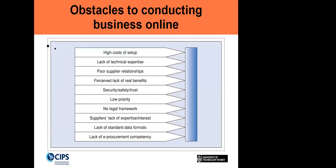Obstacles to implementing e-procurement: first, high cost — you need to spend several million dollars to buy high-level electronic procurement applications. Second, lack of technical expertise — if you do not have the expertise to implement electronic procurement, you need to hire people. Third, poor supplier relationships — electronic procurement may result in less face-to-face communication with suppliers, which can end up weakening the relationship. Other issues include perceived lack of real benefits, security concerns, and low organizational priority.